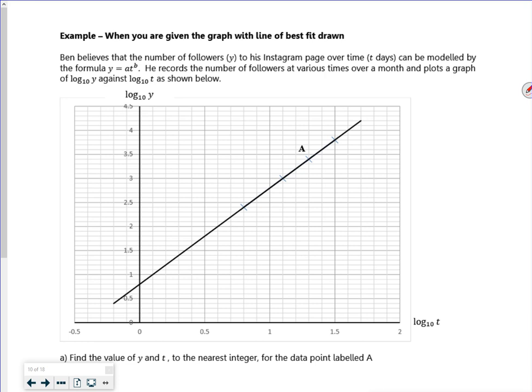Hi everyone, this is the second lesson for using logs to model data. Given the equation y equals a t to the b, we've got y and t as our original variables and a and b are the constants.